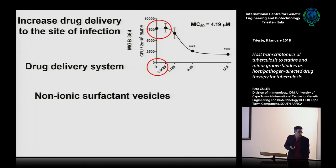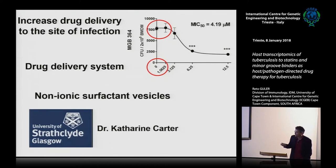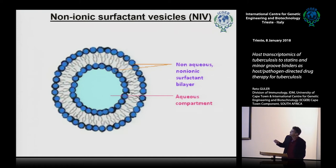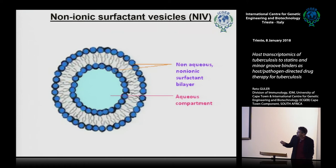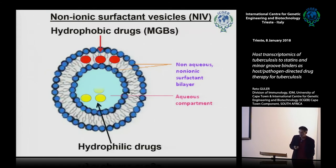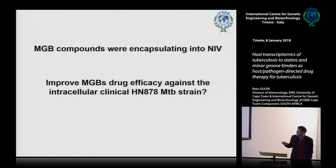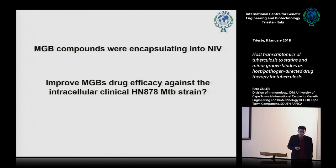For this purpose, we wanted to use non-ionic surfactant vesicles (NIFs), produced by our collaborator Catherine Carter at the University of Glasgow. These are small vesicles with surfactant bilayers and an aqueous compartment that can deliver both hydrophobic and hydrophilic drugs. We encapsulated the hydrophobic MGBs into these NIFs for better delivery into macrophages, and wanted to examine whether the encapsulated MGBs were better able to kill TB inside macrophages.